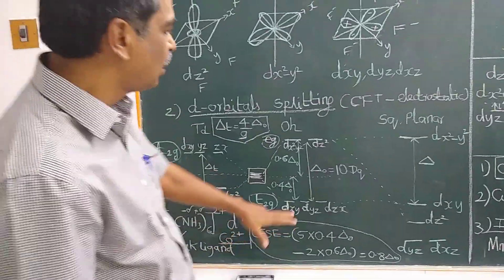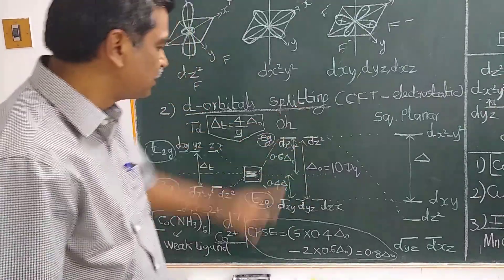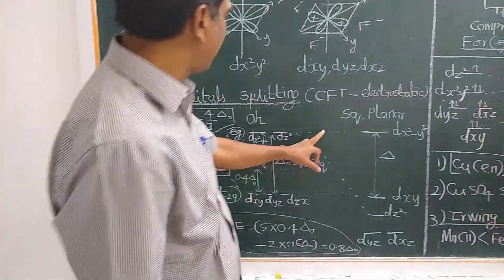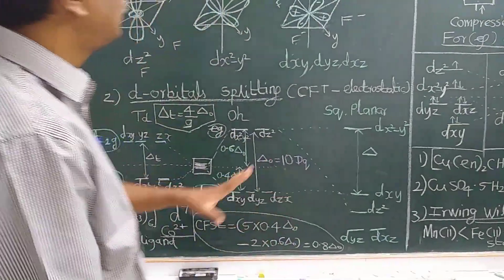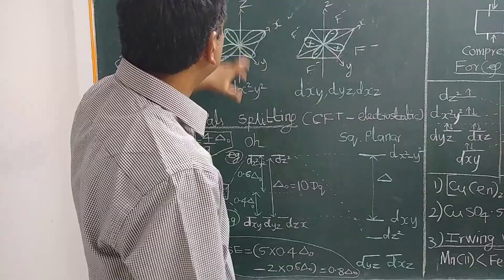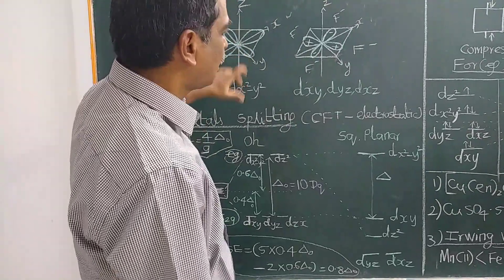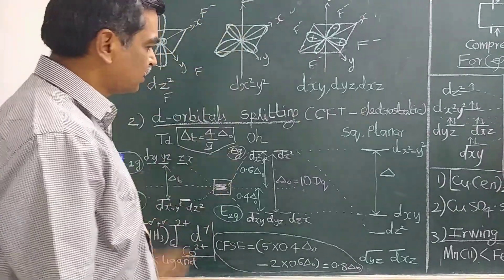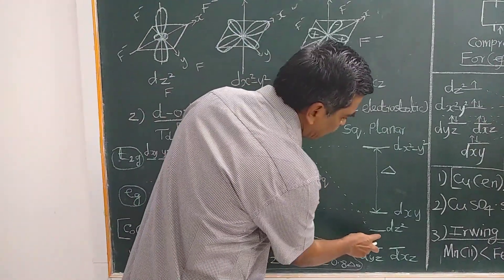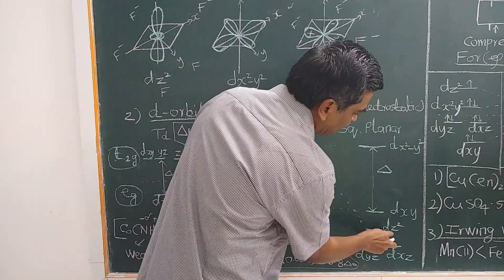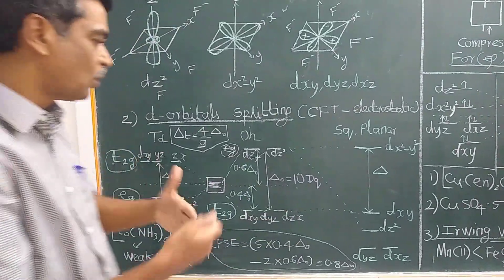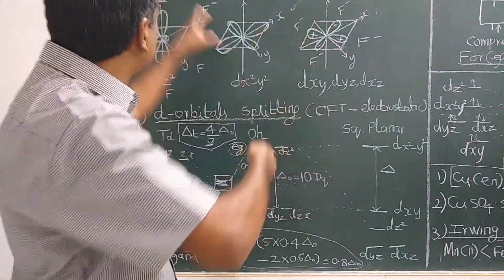Because of this D-orbital splitting, D-D transitions take place when the complex absorbs light — electrons jump from a lower level to a higher level, absorbing in the visible region. This gives transition metal complexes their colorful spectra.